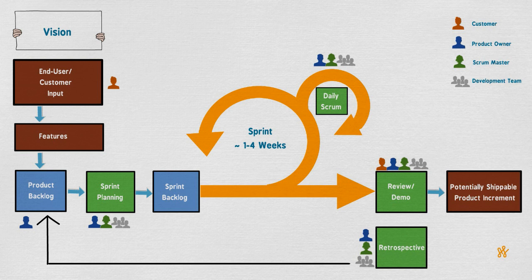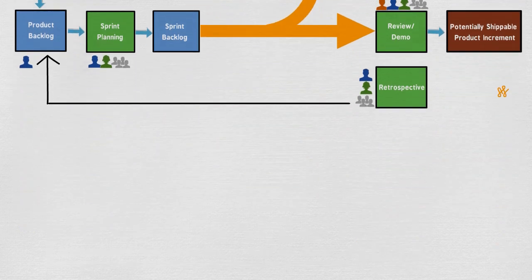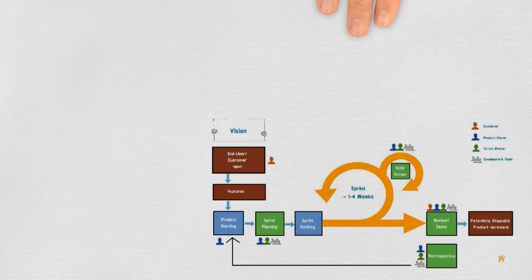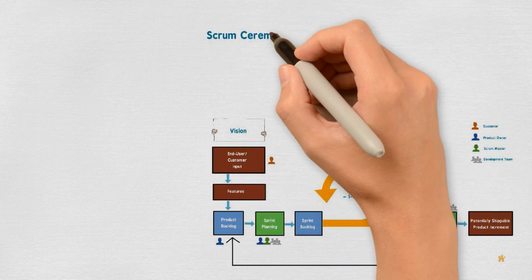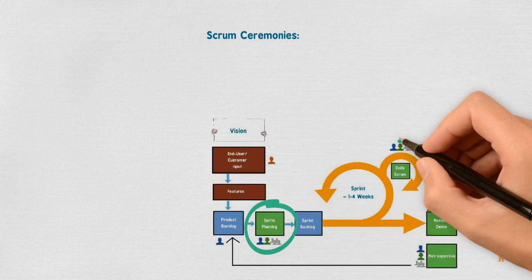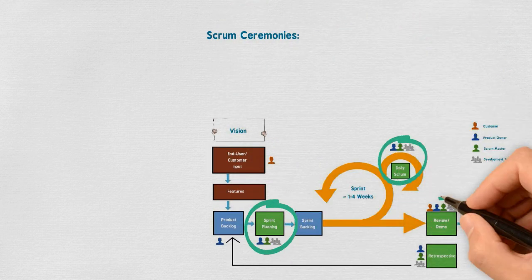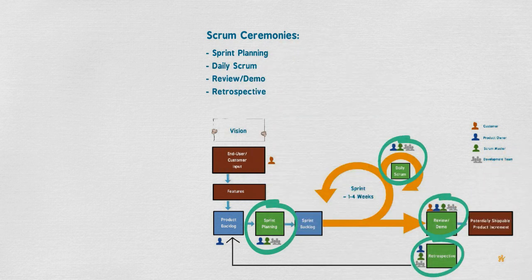Scrum consists of four ceremonies that we talked about: sprint planning, daily Scrum, review or demo, and retrospective — all of which must be attended by the entire team: the product owner, the Scrum master, and the development team. Only in the sprint review ceremony will the customer attend as well.